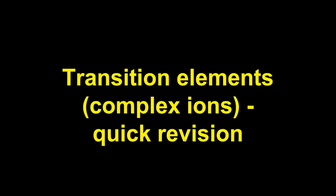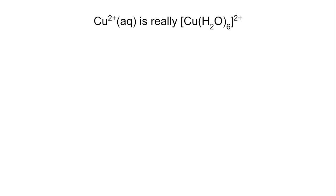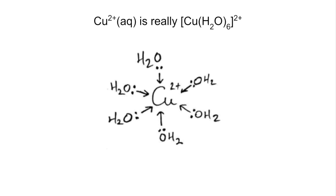A quick revision video on transition element complex ions. I'm going to start things off with this statement here. Cu2+ aqueous is really, in square brackets, Cu(H2O)6 2+. This is what we refer to as a complex ion, and that's what it looks like there. I'll just label a few things. We've got coordinate bonds connecting the water molecules to the central transition metal ion, and these water molecules are referred to as ligands.